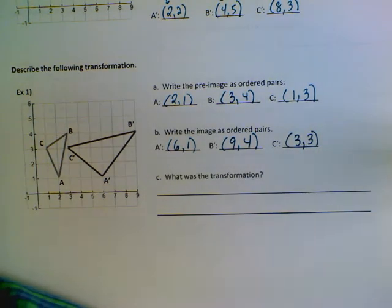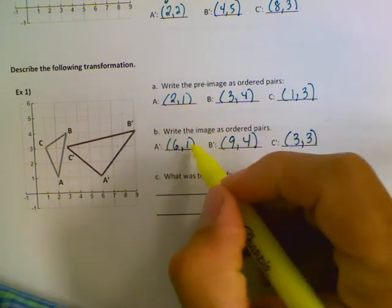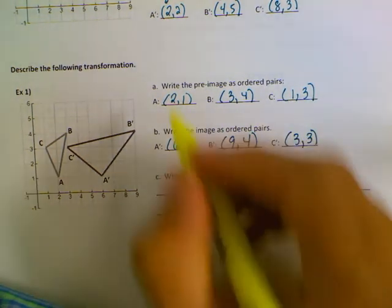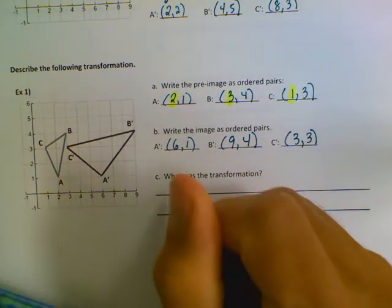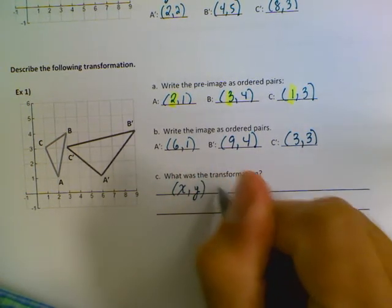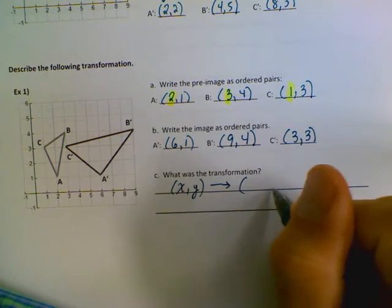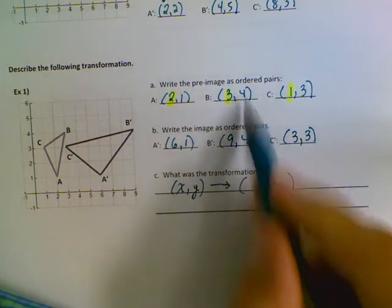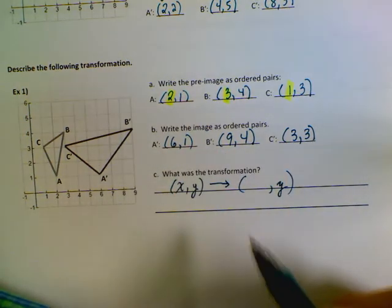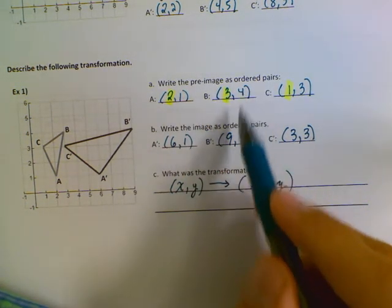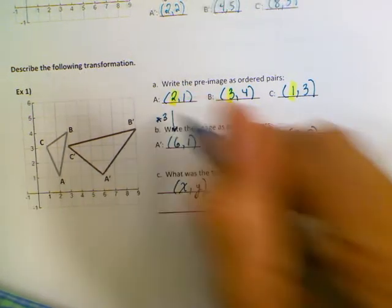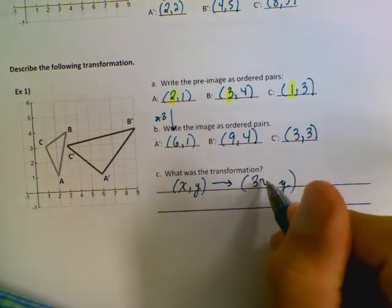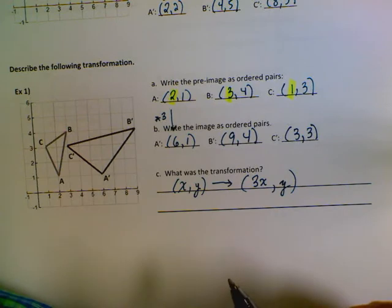So we'll look at the pre-image. We notice that the y-coordinates have actually stayed the same, but something has happened to the x-coordinates. So I know that (x, y) is going to turn into (something, y) because the y value never changed. But 2 turned into 6, 3 turned to 9, and 1 turned into 3. So to me that looks like we have multiplied by 3 on each case. So we're going to say (3x, y). Every point we're just multiplying 3 by the x-coordinate.